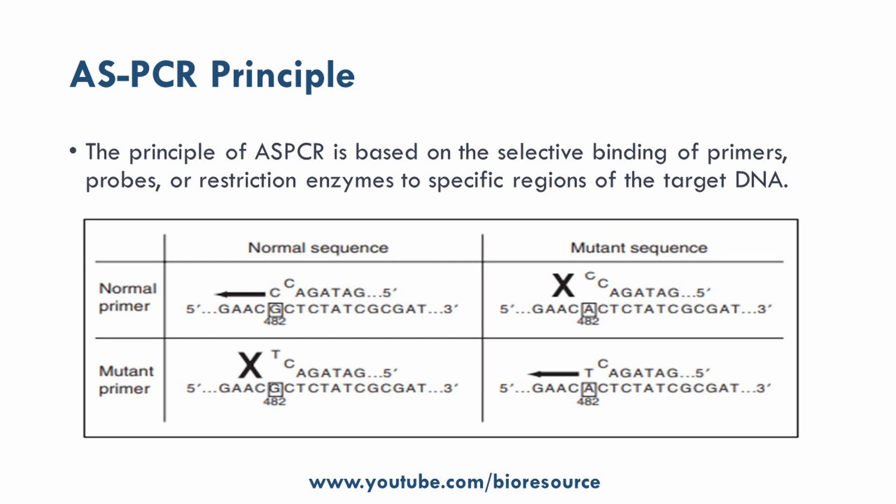Let's look at the principle of allele specific PCR. The principle is based on selective binding of primers, probes, or restriction enzymes to specific regions of the target DNA. Here you can see the primer design strategy followed in allele specific PCR. There is a normal sequence and a mutated sequence. If you want to target the normal sequence, a deliberate mismatch is added to bring about specificity. In the case of the mutant primer targeting the normal sequence, the reaction will not amplify or produce any PCR product. Whereas when targeting the mutated sequence, the mutant primer will amplify the sequence if the mutation is present. In the case of wild type, the mutant primer will not amplify — only the wild type sequence will get amplified.